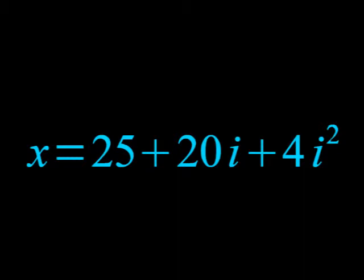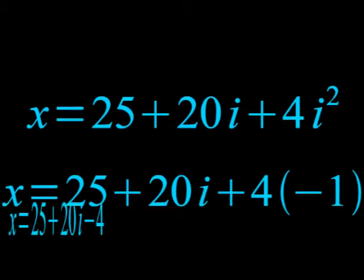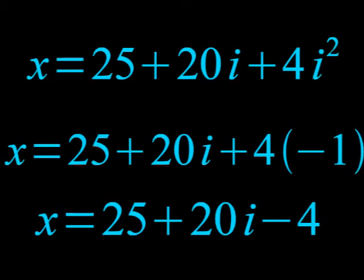we can do something about that 4i squared at the end. If we recall that i squared is nothing more than negative 1, we can rewrite this as 4 times negative 1, or negative 4.